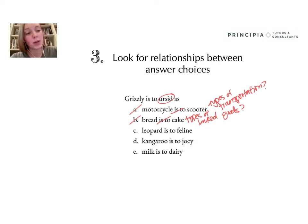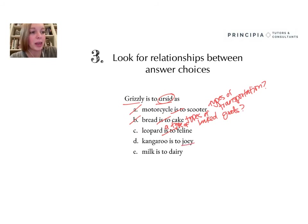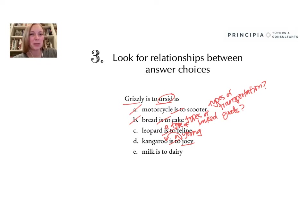For C — leopard is to feline. I can definitely create a relationship sentence: a leopard is a type of feline. So does it seem possible that a grizzly is a type of ursid? Ursid is maybe kind of the scientific name for bears — that does seem like it could be possible, so I'm going to leave that option. D — kangaroo is to joey. A joey is a young kangaroo, so could an ursid be a young grizzly? I know that young bears are typically called cubs, so this seems like it's maybe not the best answer — I'm going to eliminate that one.